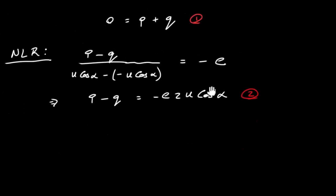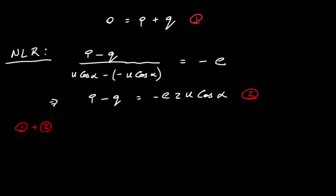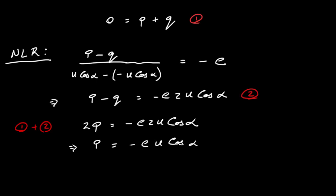Adding equations 1 and 2: the Q terms cancel, giving 2P = -2EU cos(α), so P = -EU cos(α). From equation 1, P + Q = 0, so Q = -P = EU cos(α).